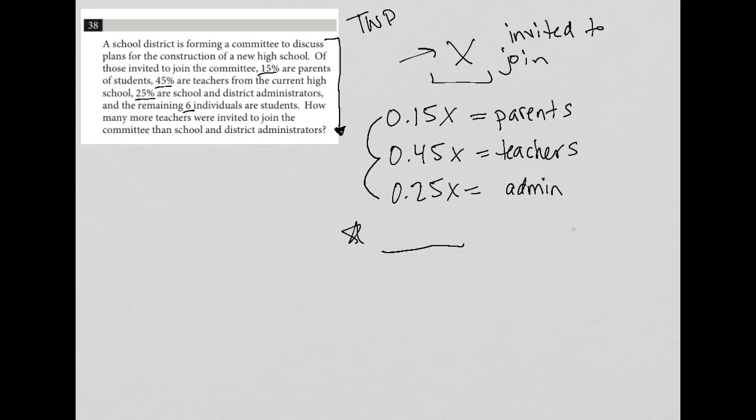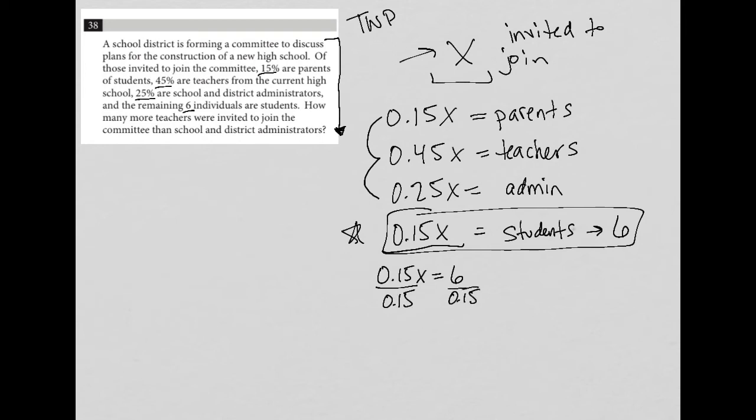Which means we have 0.15 or 15 percent of the number of people invited to join who are students, but we're also told that represents six people. So I'm going to create the equation, which would then say that 0.15X equals six. So I can divide both sides by 0.15 in order to find out what X we're dealing with here.